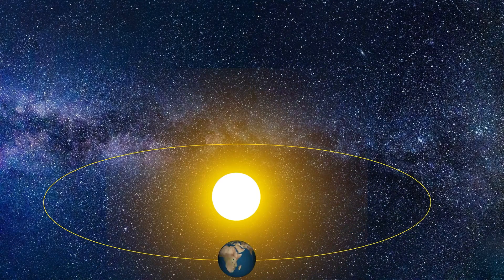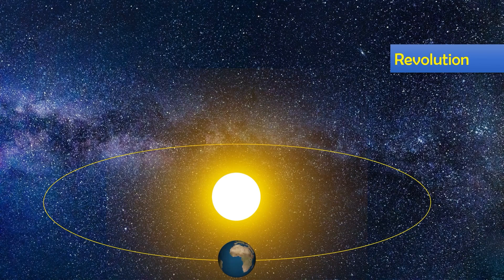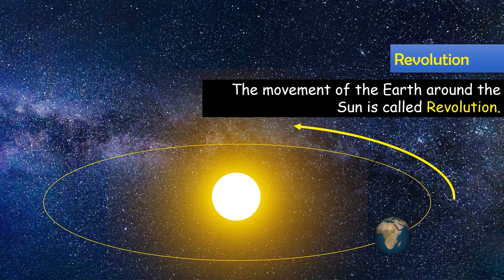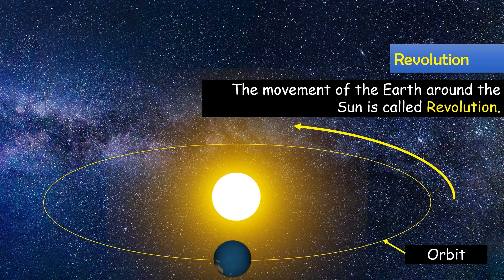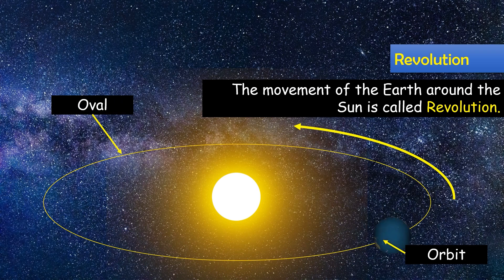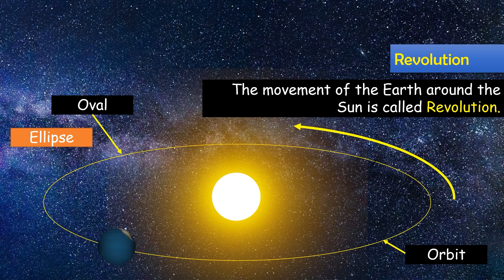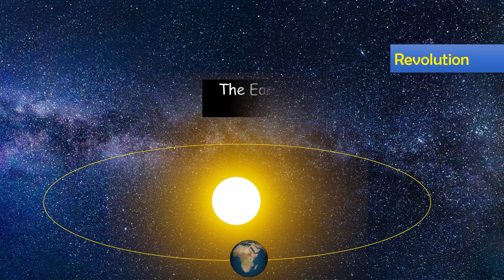Next, revolution. The earth also rotates on its axis and moves around the sun. This motion of the earth around the sun is called revolution. In this movement, the earth follows a fixed path known as its orbit. The orbit of the earth is not circular — it is rather oval shaped. Such a shape is called an ellipse.